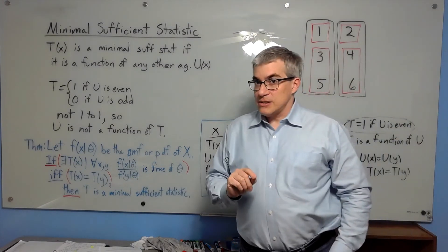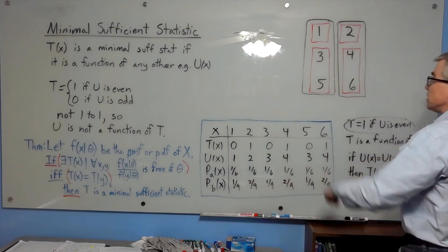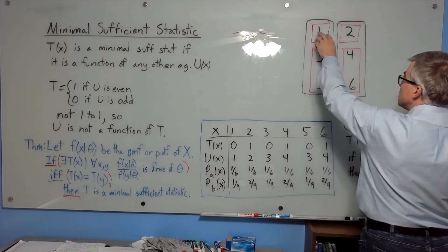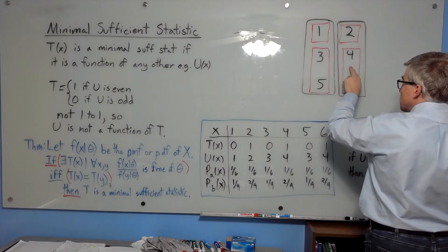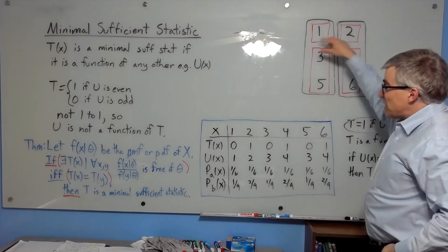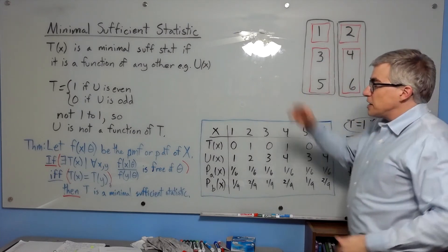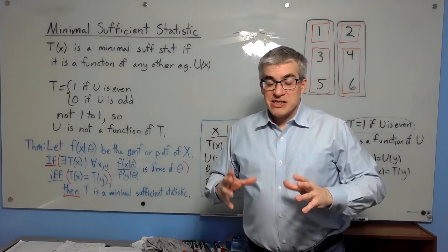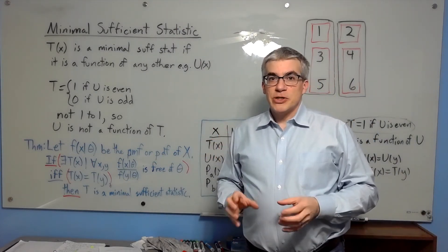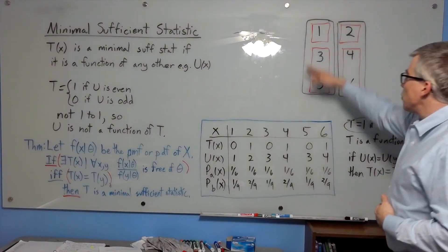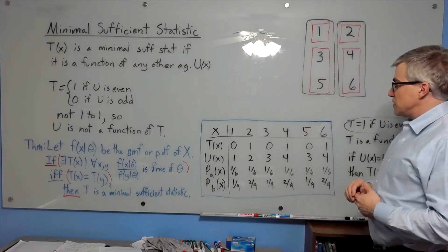We can do more than that and have a sufficient statistic, such as u, which breaks it into four categories: 1, 2, u equals 3, and u equals 4. But notice that is a finer partition. So one way to think about it is a minimal sufficient statistic is the coarsest partition possible that will convey the information you need. And you can't get any coarser than separating the odds and the evens.